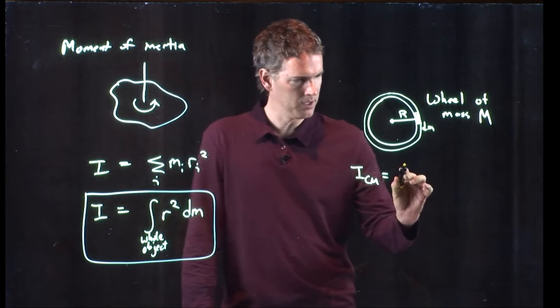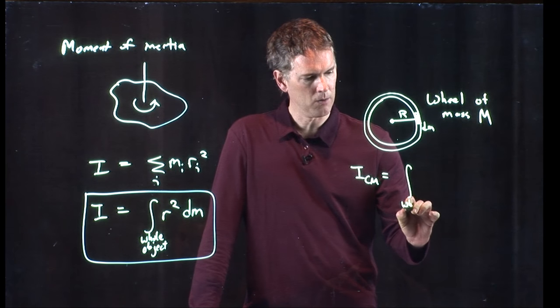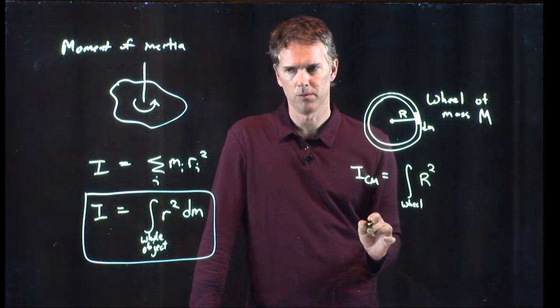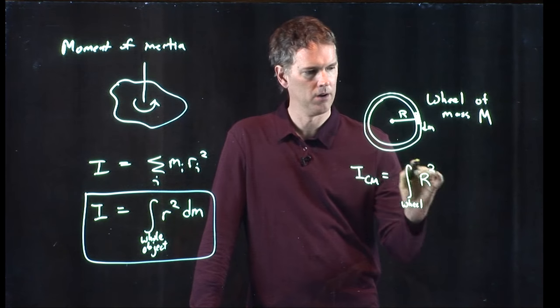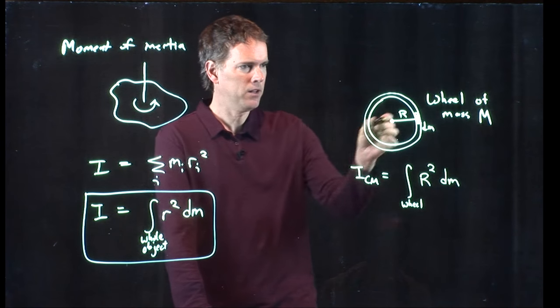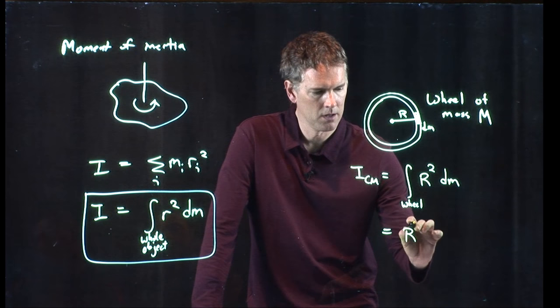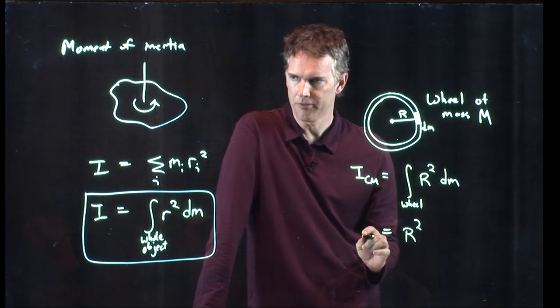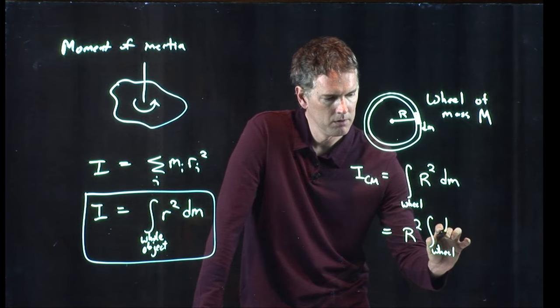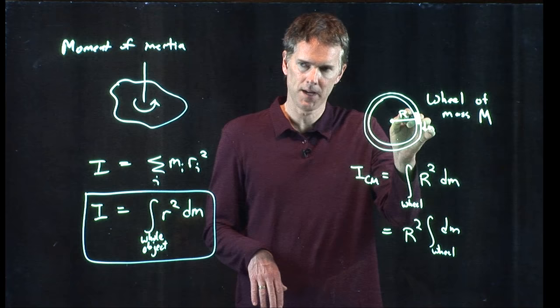And apparently this i is going to be integrate around the wheel of r squared, which in this case is capital R, times dm. But as I integrate around this wheel, r doesn't change. It comes out in front. And so now we just have to integrate dm over the rest of the wheel, over this full rotation.